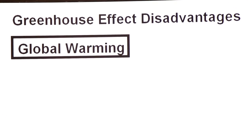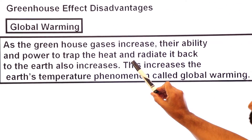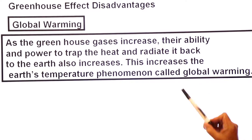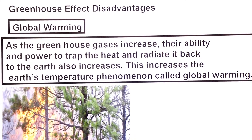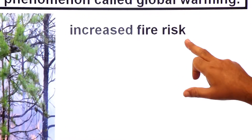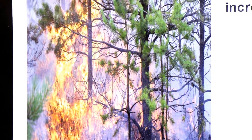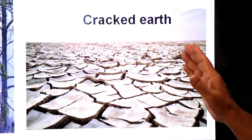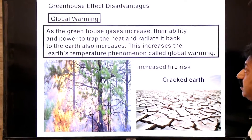What are the disadvantages of the greenhouse effect? First, global warming: as greenhouse gases increase their ability to trap heat and radiate it back to the earth, the earth's temperature increases — this phenomenon is called global warming. Global warming increases fire risk, damages forests, extends fire seasons, and causes cracks in the earth's surface.